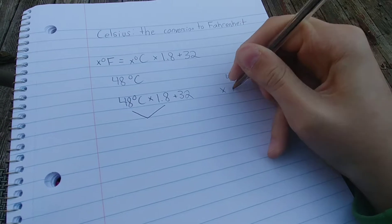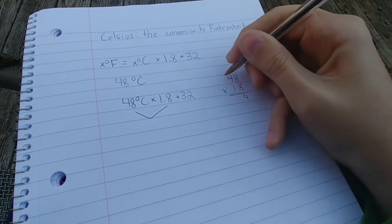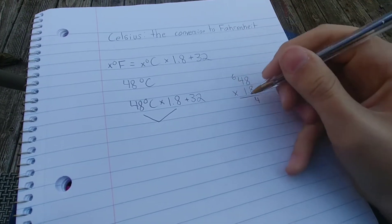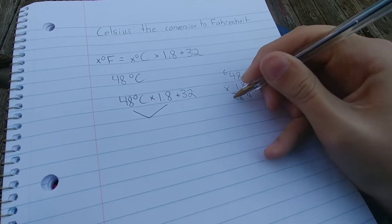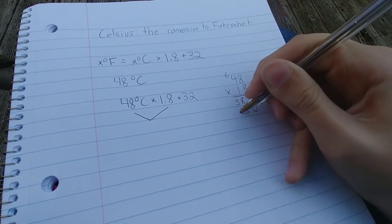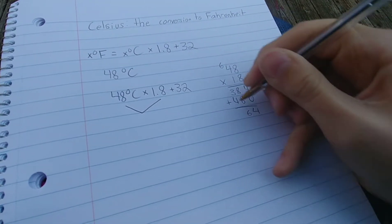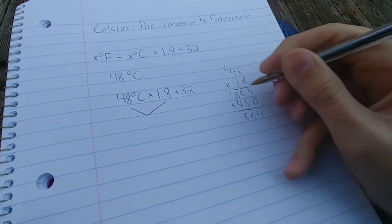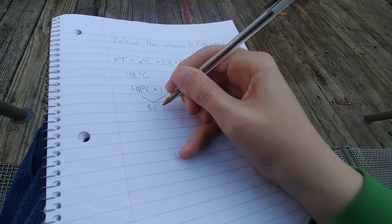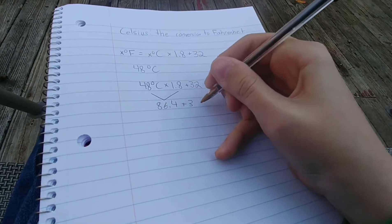So 8 times 8 is 64. 32 plus 6 is 38. Drop 0, 8, 24. Put in the decimal point. That's 86.4. Then you would just add 32.